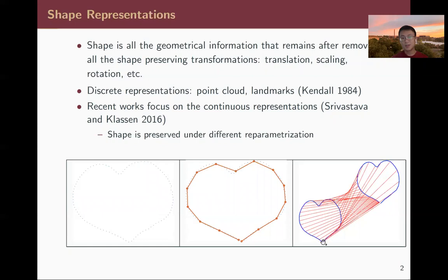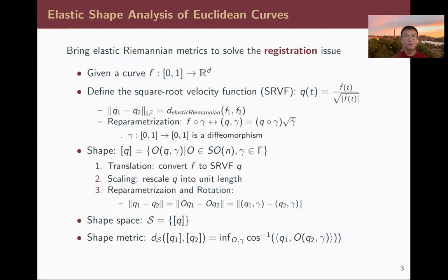Under this continuous representation, shape is also preserved under different parameterizations — this is known as the registration issue, essentially point correspondence across different objects. There is a very popular solution: using the elastic Riemannian metric. The whole framework is simplified by the square root velocity function, SRVF.